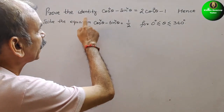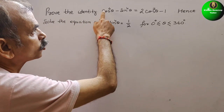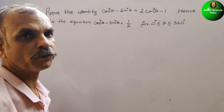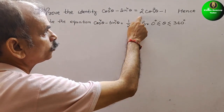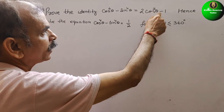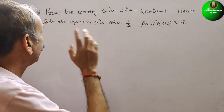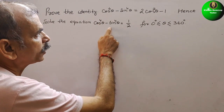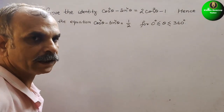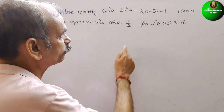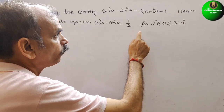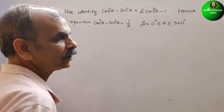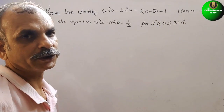Your question is: prove the identity cos to the power of 4 theta minus sin to the power of 4 theta is equal to 2 cos square theta minus 1. Hence, solve the equation cos to the power of 4 theta minus sin to the power of 4 theta is equal to 1 by 2, for 0 degree less than or equal to theta less than or equal to 360 degree.